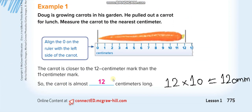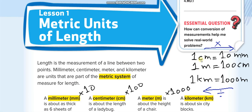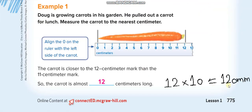Now they measure a carrot. Place the ruler with zero on the first line, then check where the second line falls. This is a centimeter ruler. The second line is at 12, so the length of the carrot is 12 centimeters. To convert to millimeters: one centimeter equals 10 millimeters, so 12 times 10 equals 120 millimeters.